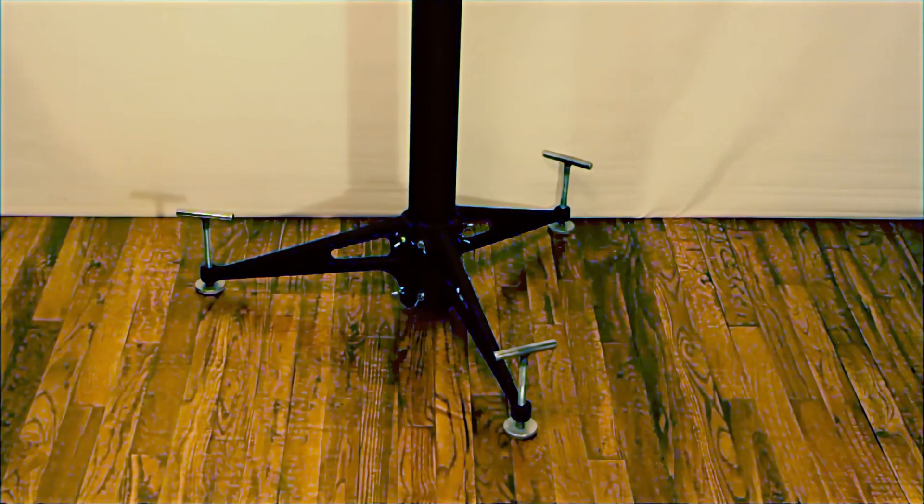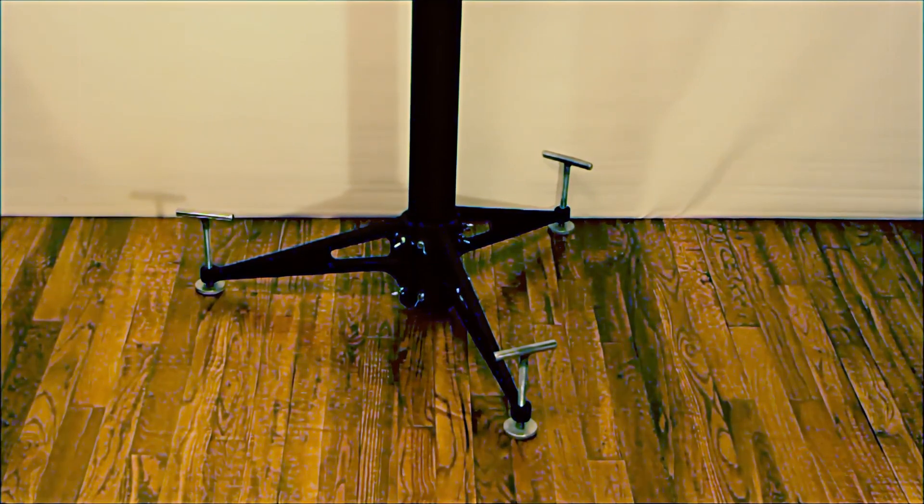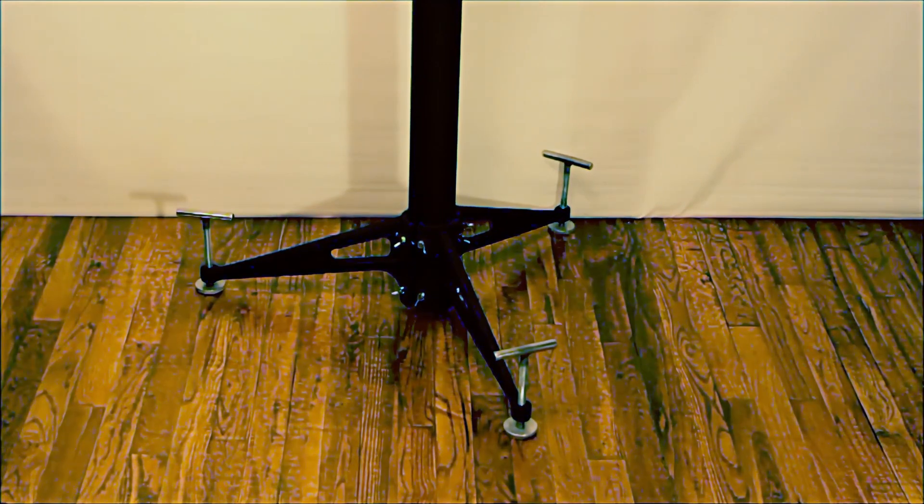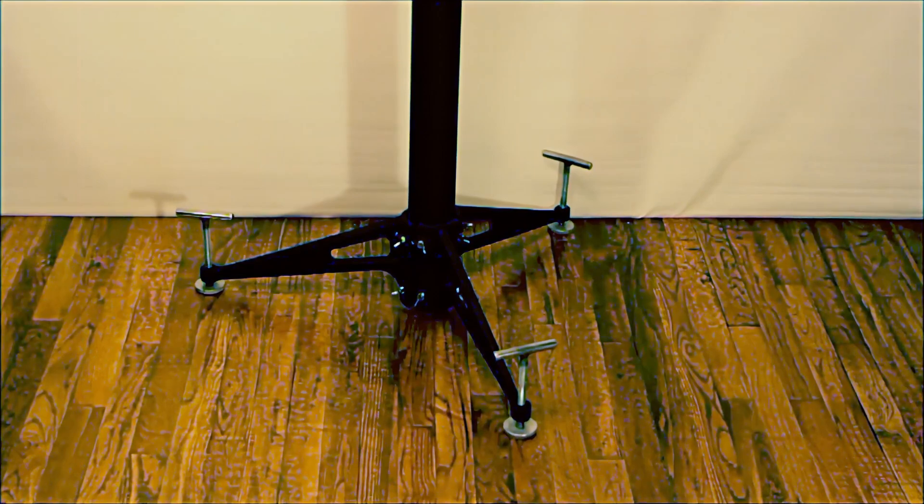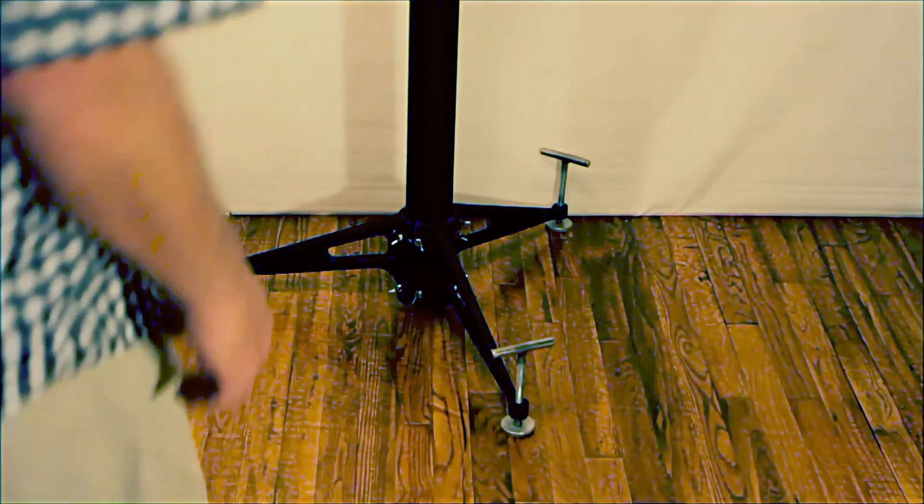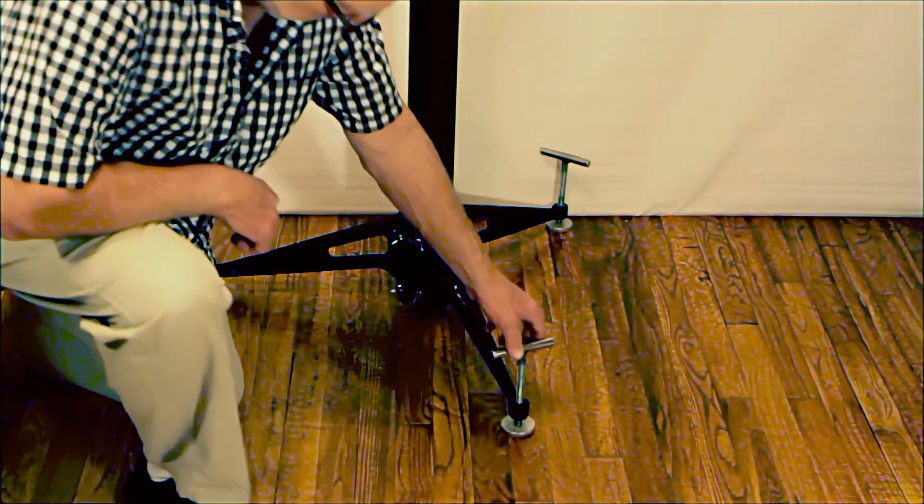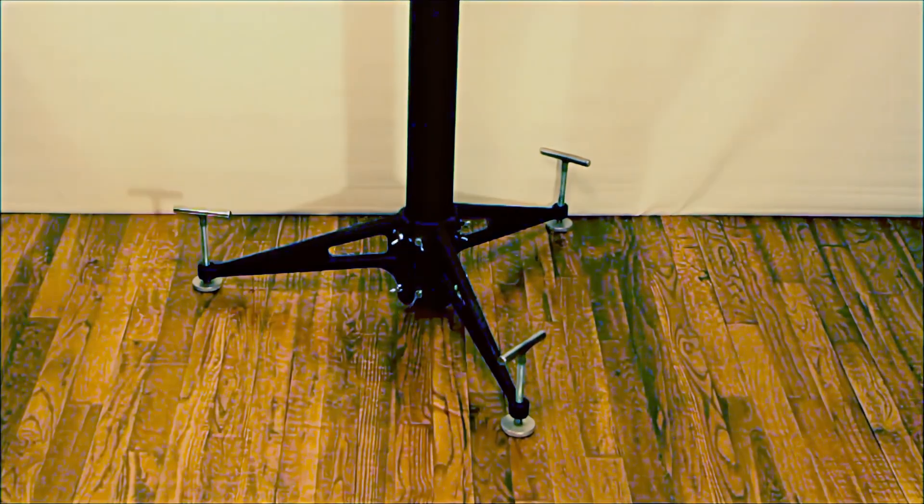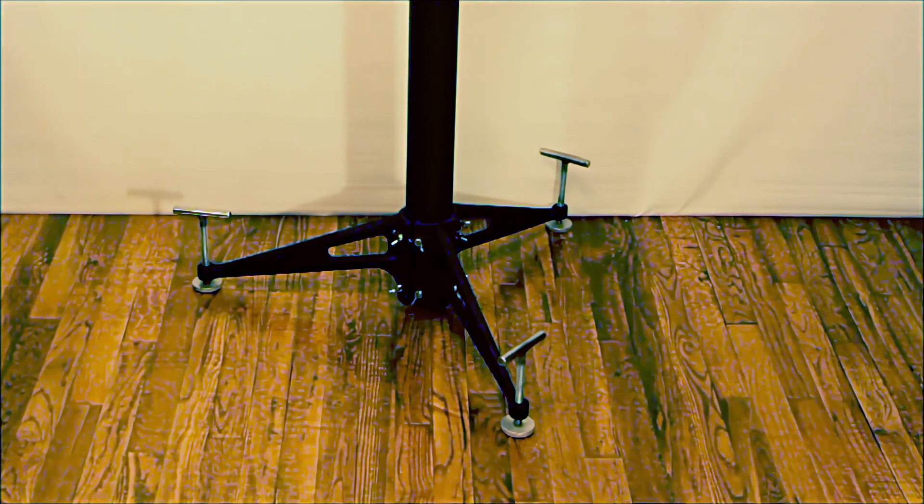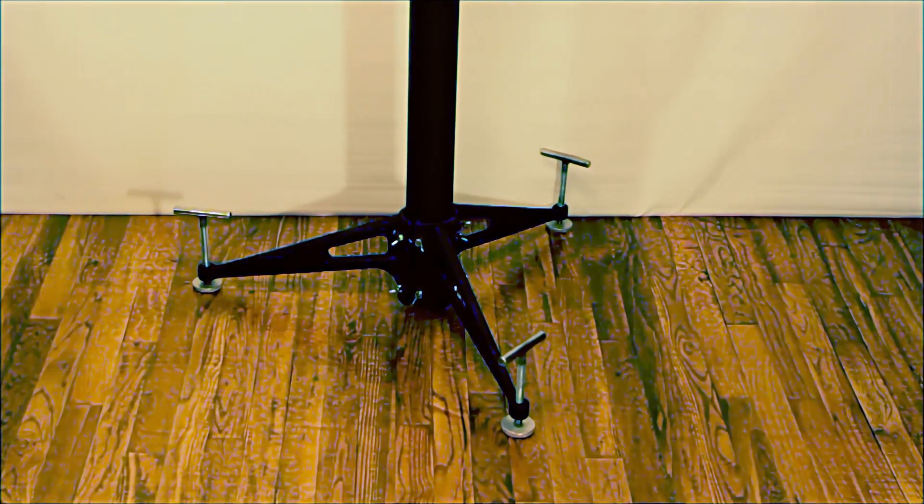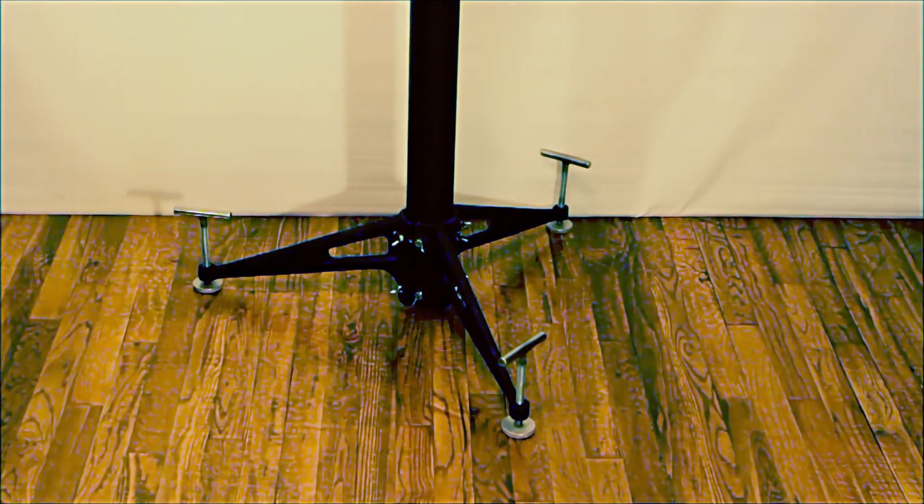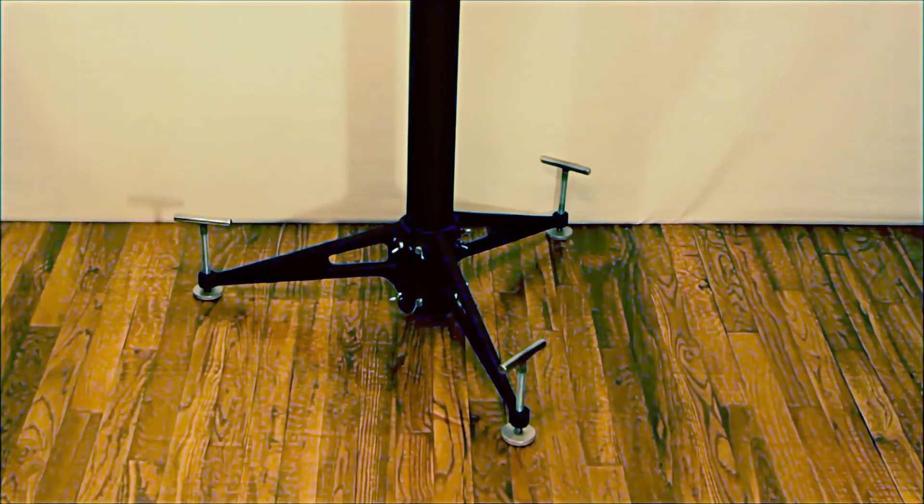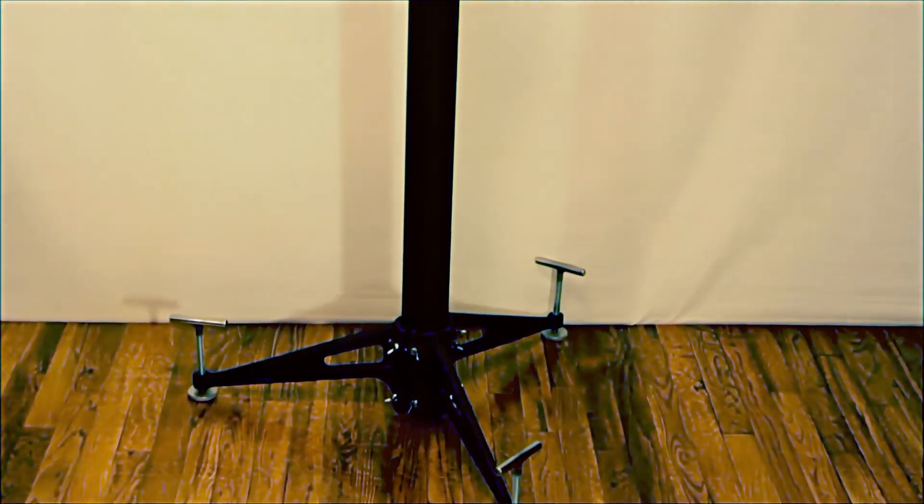Before we get started I wanted to show you these leveling screws on the pier legs. You can see that they look very fancy and they work pretty well. However, you can also see that these are very much a tripping hazard. So one of the first things I did when I actually used the scope was to take those off and replace them with some half inch bolts, easy to do.